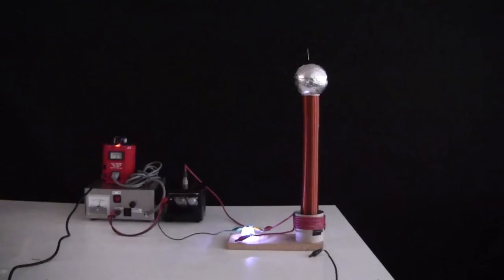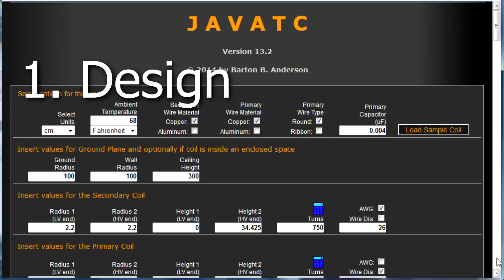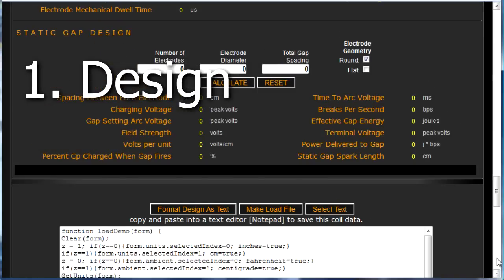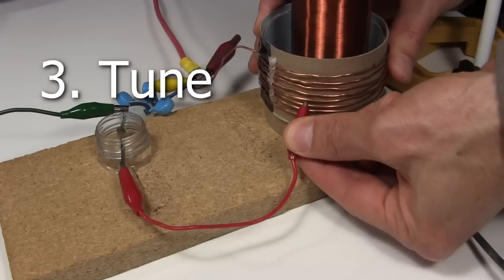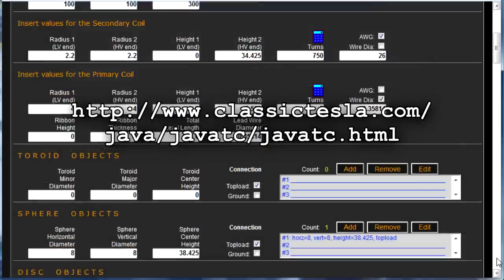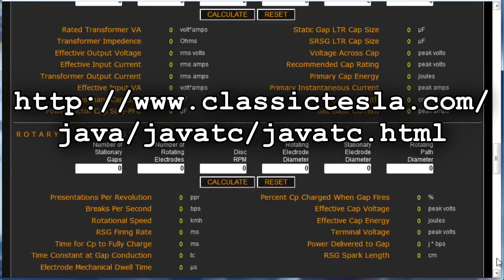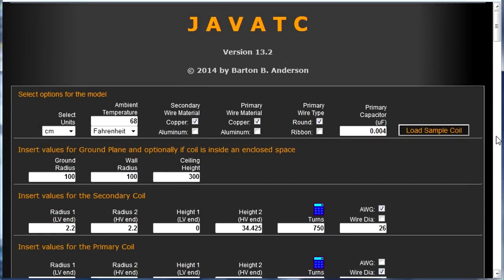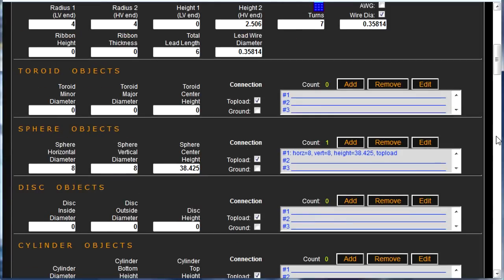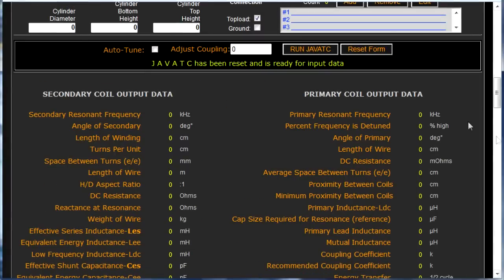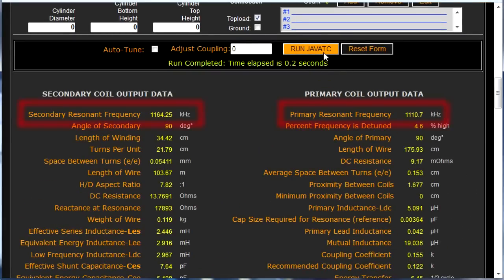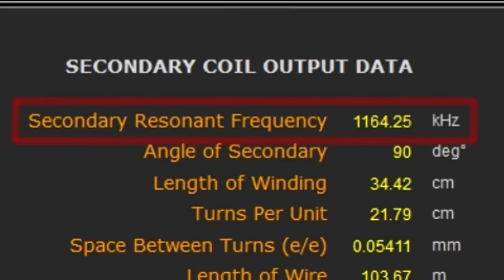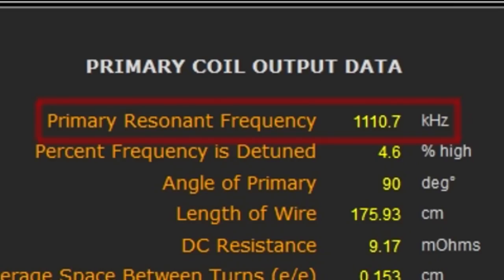One approach to getting the frequencies the same is to start by designing your Tesla coil using an online Tesla coil calculator, then making it and then tuning it, since what you make won't exactly match what you calculated. The online calculator I used is this very popular one called Java TC. I didn't use all the features of this calculator, just the things in the top section. What I was shooting for was that when I click on its Run Java TC button, the two frequencies it gave me here would be close to the same. This is the resonant frequency for the secondary circuit, and this is the resonant frequency for the primary circuit.